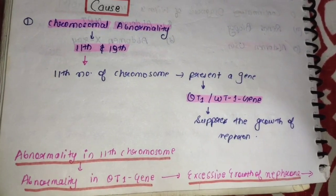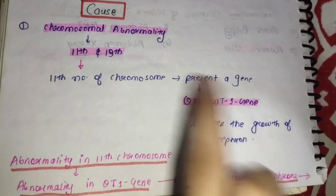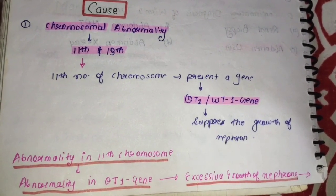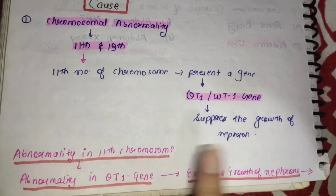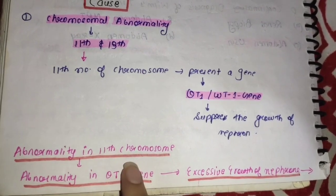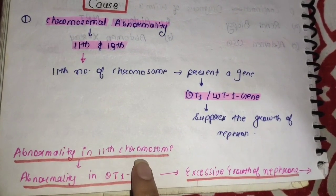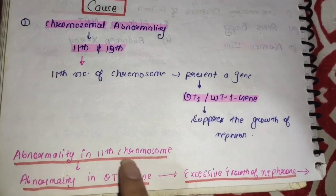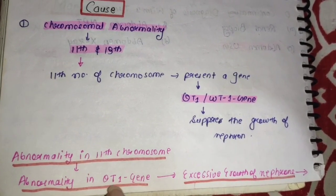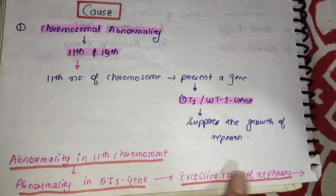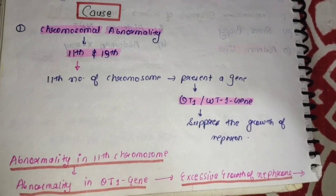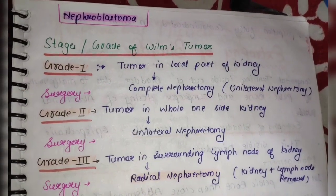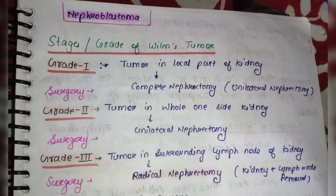क्योंकि जिस growth को ये chromosomes रोकने का काम करते हैं, उनमें abnormality हो चुकी है, तो अब जो growth होगी वो ज़्यादा देखने को मिलेगी. Abnormality in the 11th chromosome, abnormality in the WT1 gene, जिसकी वजह से excessive growth देखने को मिलेगी nephron की, and इस excessive growth की वजह से देखने को मिलेगा nephroblastoma.